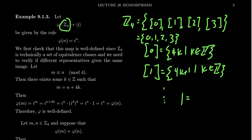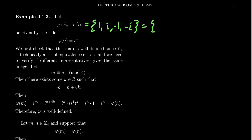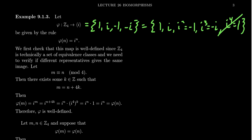We can say 1 is congruent to 5 mod four because both belong to the congruence class of one. Now compare Z₄ to the multiplicative group generated by the complex unit i: the group {1, i, −1, i³} = {1, i, −1, −i}. This is also a cyclic group: starting from i, you get i, then i² = −1, then i³ = −i, and i⁴ = 1 again. So we have two cyclic groups of order four, and I claim they are isomorphic.